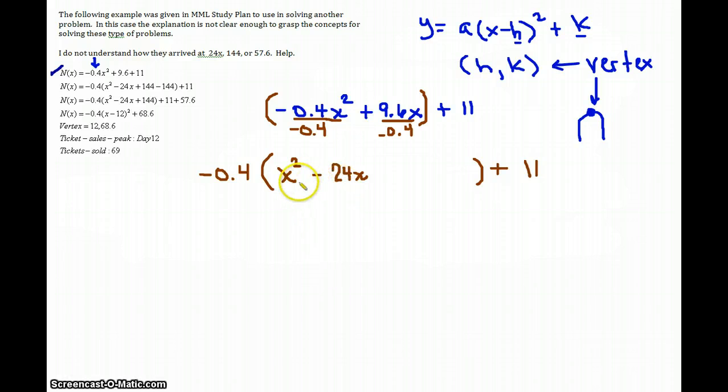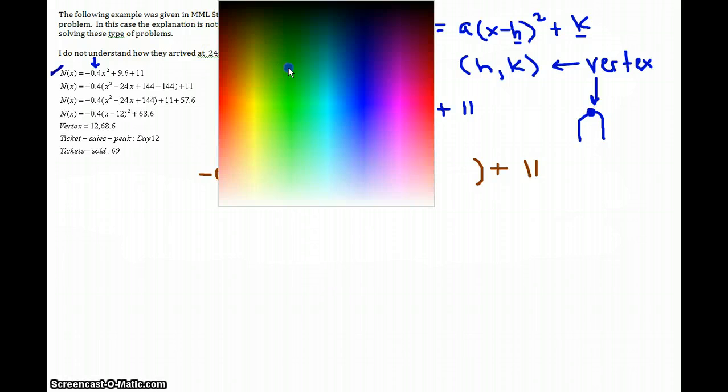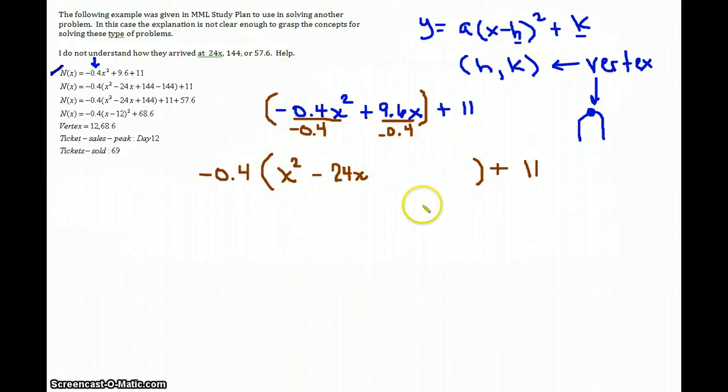The next thing I'm going to do is I'm going to complete the square with whatever is inside the parenthesis. In other words, with the x square minus 24x. And to complete the square, you need to take the coefficient of the x, which in this case is negative 24, and you're going to do two things. Number one, you're going to divide it by 2, and then whatever answer you get, you're going to square it. So negative 24 divided by 2 is negative 12. Negative 12, when you square it, that's going to be 144.